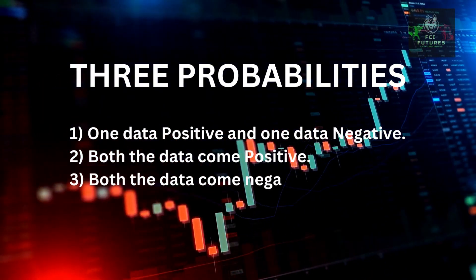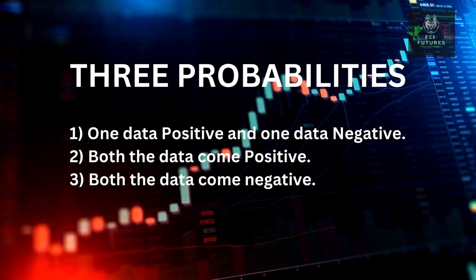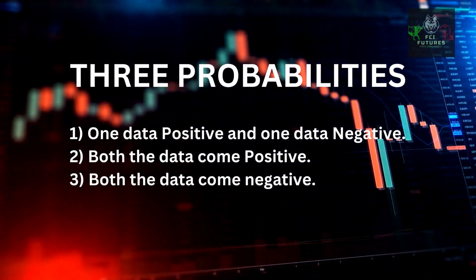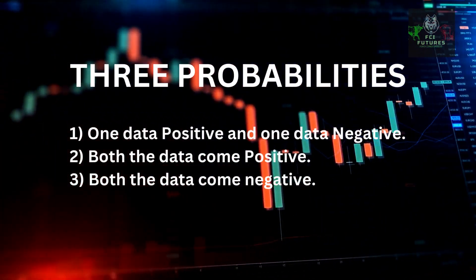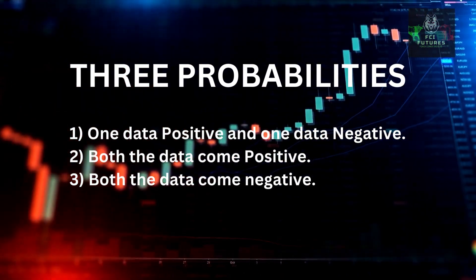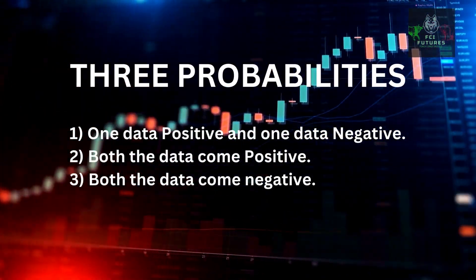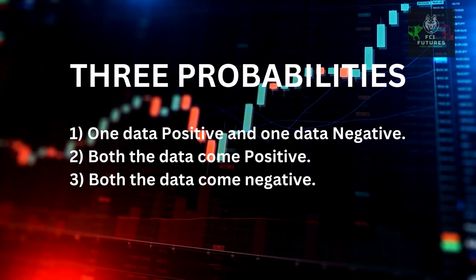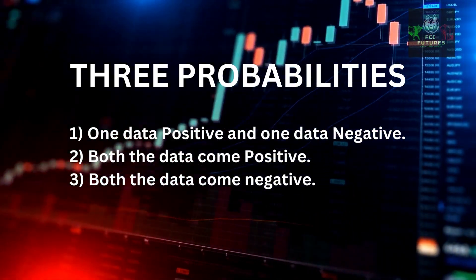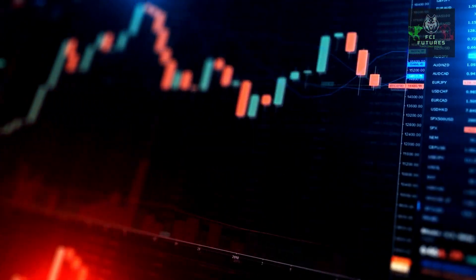If the actual data comes mixed, then we can witness a sideways movement depending upon the actual outcome. But beside this, we could see two other outcomes — that is, both the data come positive or negative. So today, we will be analysing gold based on these three probabilities.